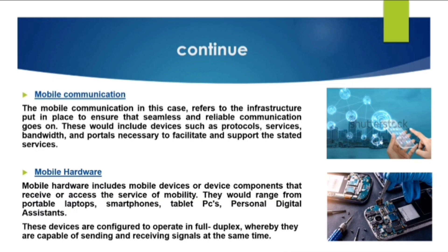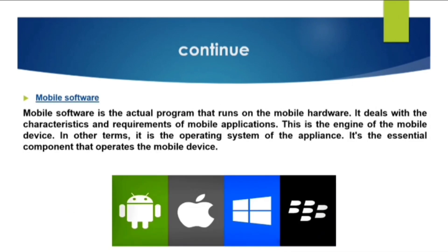Next is mobile software. Mobile software is the actual program that runs on the mobile hardware. It deals with the characteristics and requirements of mobile applications — it is the engine of the mobile device. In other terms, it is the operating system of the appliance; it is the essential component that operates the mobile device.